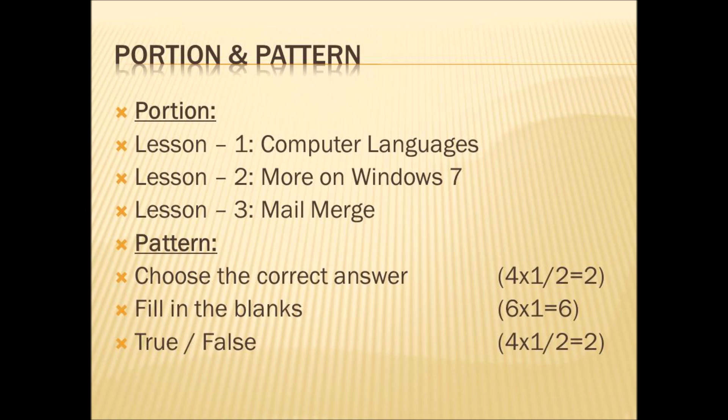The exam pattern: Section I is Choose the Correct Answer — 4 questions, half mark each, totalling 2 marks. Section II is Fill in the Blanks — 6 questions, 1 mark each, totalling 6 marks. Section III is True or False — 4 questions, half mark each, totalling 2 marks. You are writing for 10 marks in total.